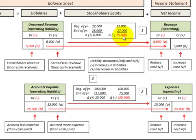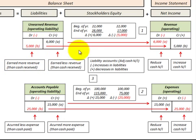If we had a reduction in unearned revenue of $5,000 for the year, we debit unearned revenue for $5,000 — that's because we earned more revenue than the cash we received. We then credit our revenue account for $5,000, increasing net income, because we earned more revenue than the cash that we received.